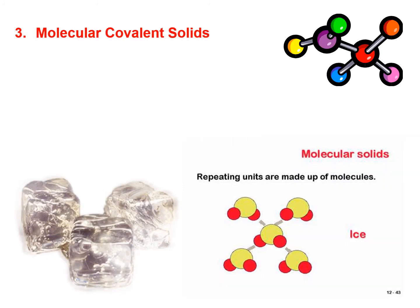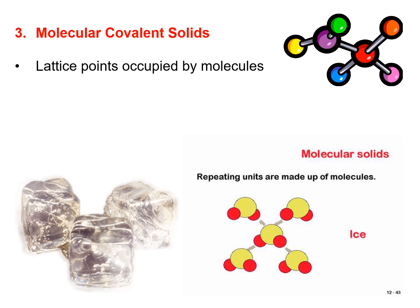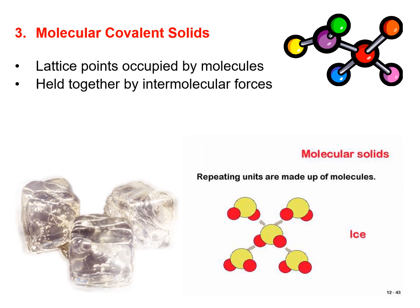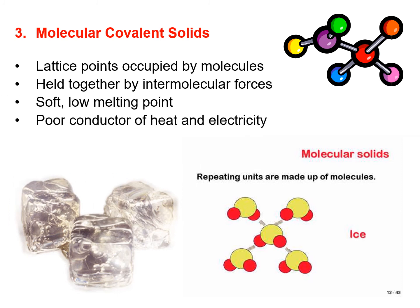For simple molecular covalent solid, the lattice points are occupied by molecules. It is held together by intermolecular forces. It is soft and has a low melting point. It is a poor conductor of heat and electricity. An example shown here is ice, H₂O.